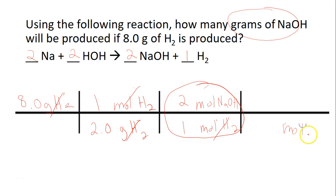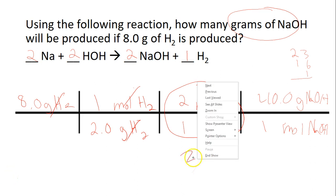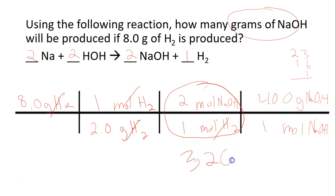We're going to bring moles of NaOH to the bottom and go to grams of NaOH. We look up the mass on the periodic table: Na is 23, O is 16, H is 1, giving us 40 as the mass per 1 mole. The last step is to multiply the top and divide by the bottom, and you get 320 grams of NaOH as our final answer. We check significant figures — we've got 2 digits, so 320 without a decimal point.